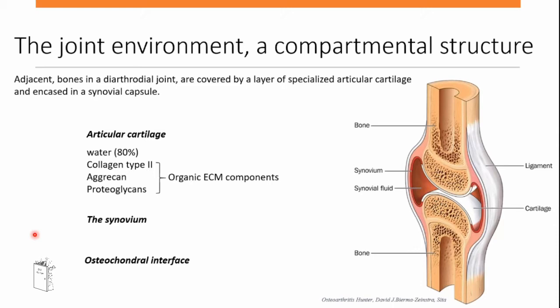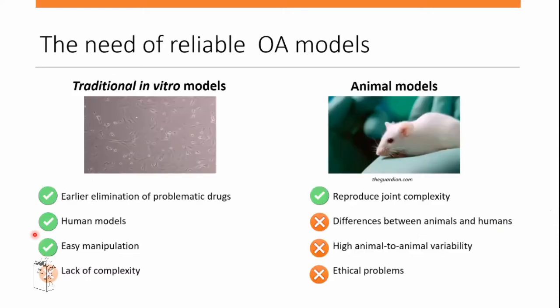What about the joint? The joint is composed of three main components: articular cartilage, the synovium, and the osteochondral interface. It's a compartmental structure, and it's really important to understand each actor involved. Since osteoarthritis is a degenerative disease, we need to find a cure for it — and right now, there are no cures available.